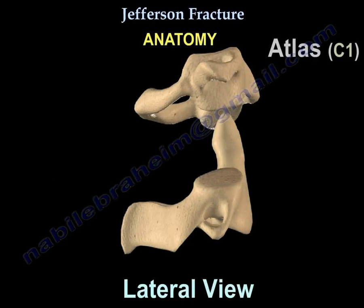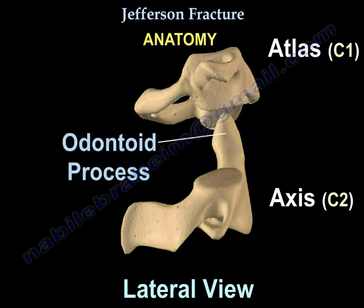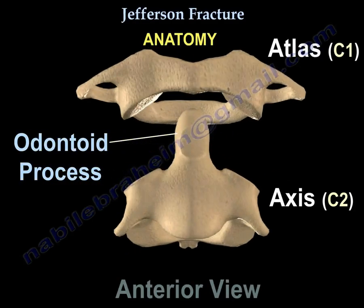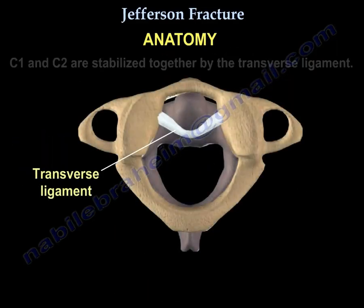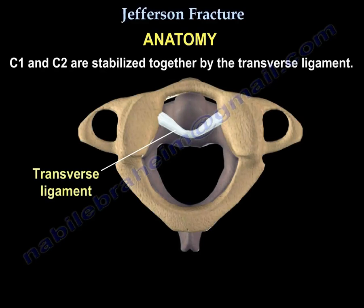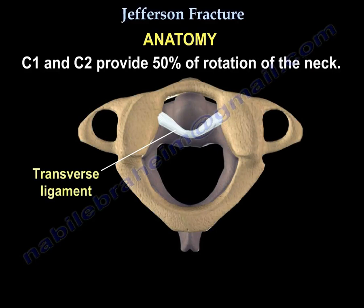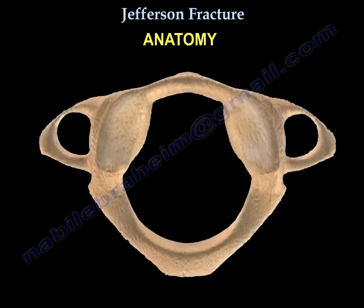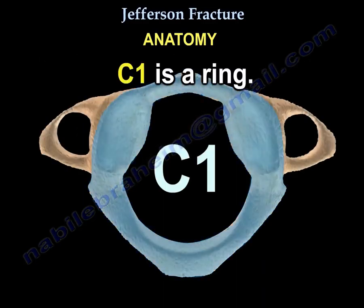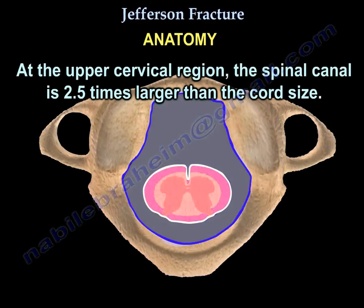Anatomy: Here is C1 and here is C2. C1 and C2 are stabilized together by the transverse ligament, and they provide 50% of rotation of the neck. C1 is a ring. At the upper cervical region, the spinal canal is two and a half times larger than the cord size.